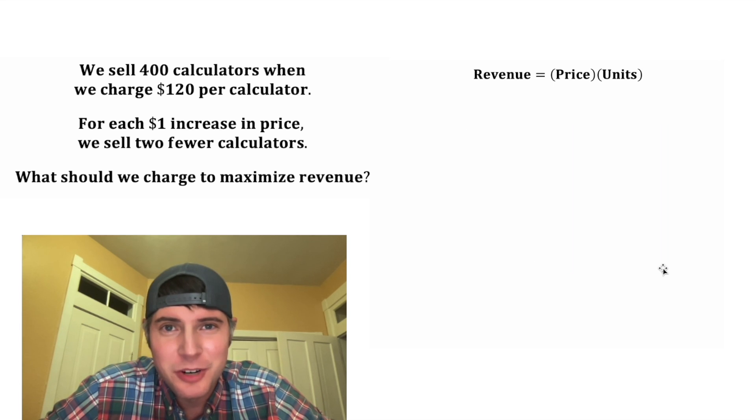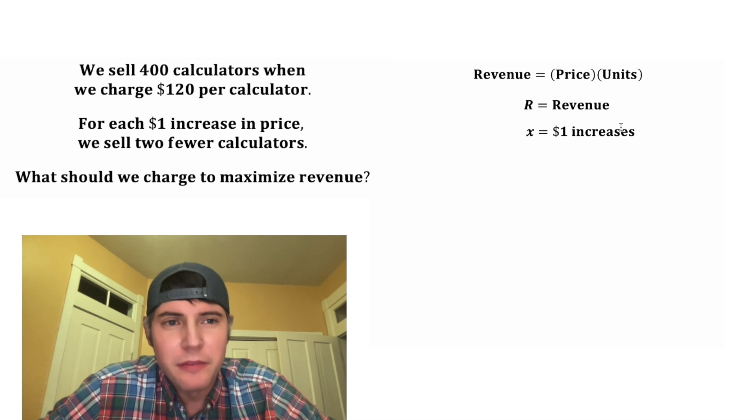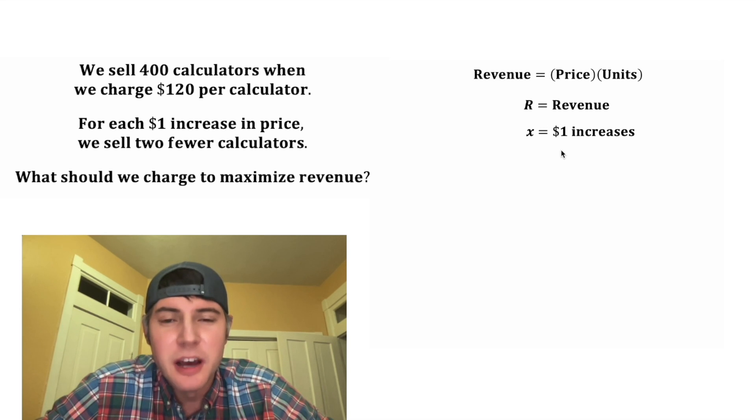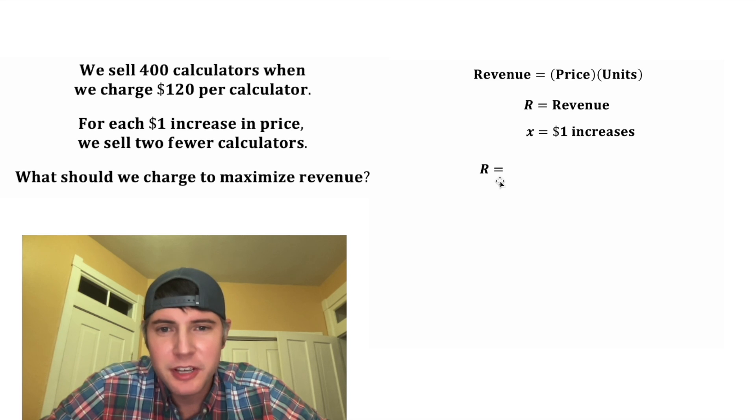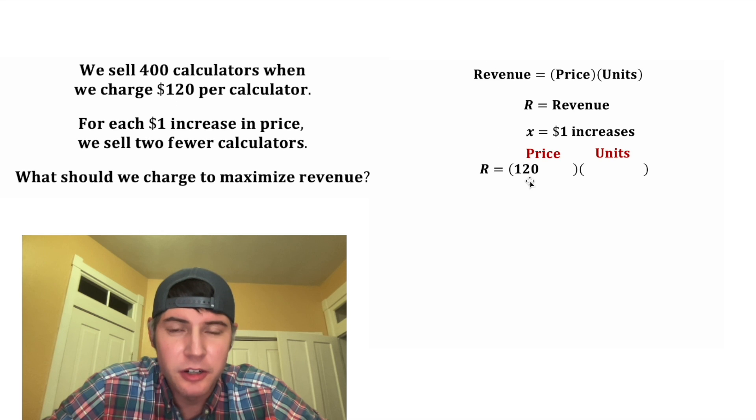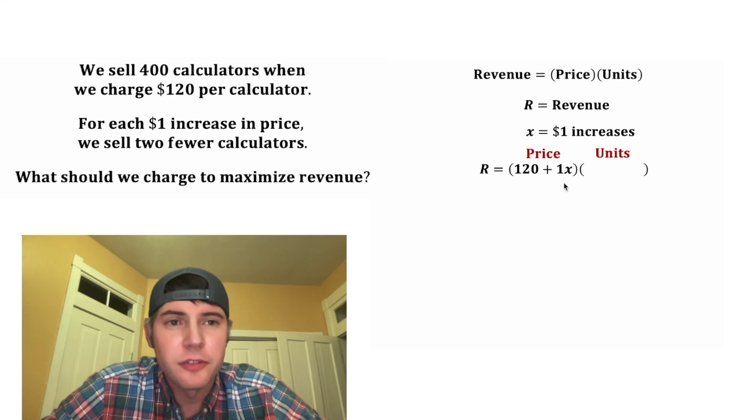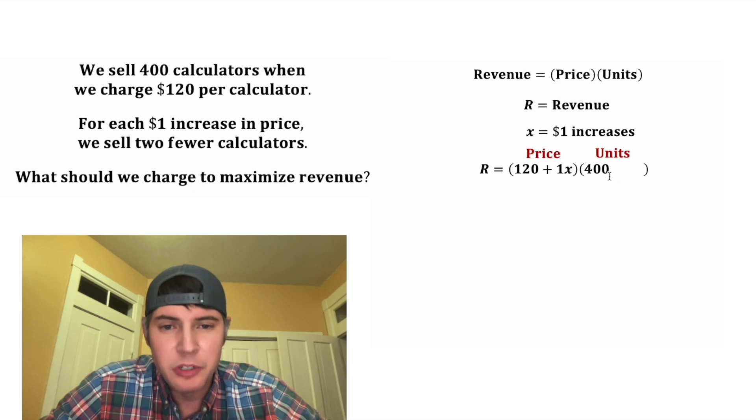Let's make an equation for this situation. Let's have R equal the revenue, and let's have X equal the number of $1 increases. So we'll do R equals, and then it's going to be price times units. For the price, we're going to start at $120, and then we're going to add $1 for every X. And then for the units, we start at 400 units, and we'll subtract 2 units for every $1 increase.